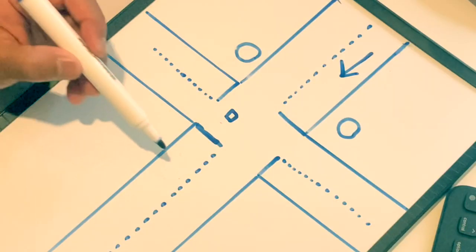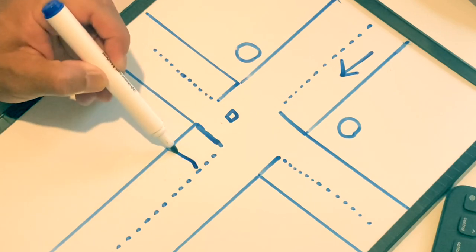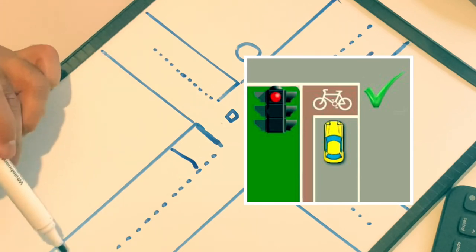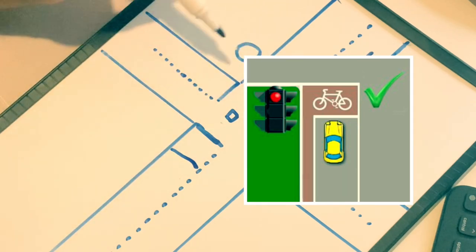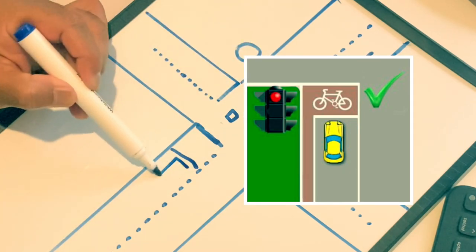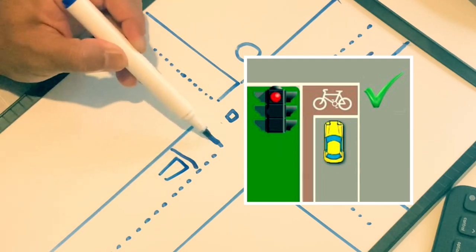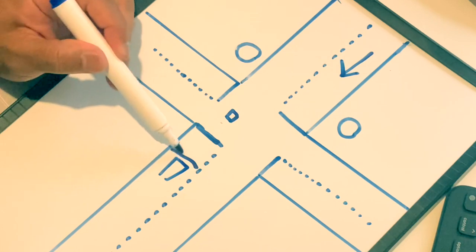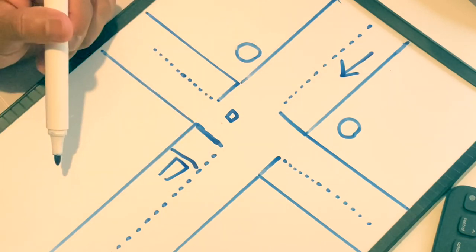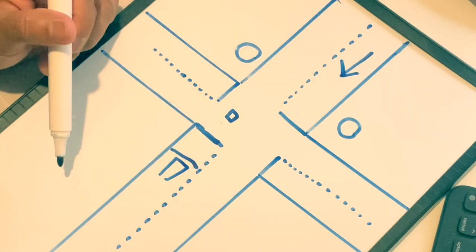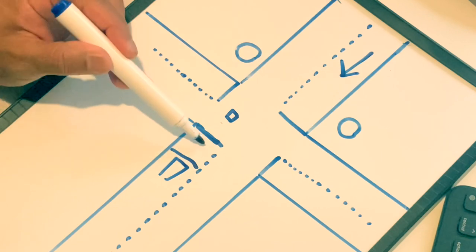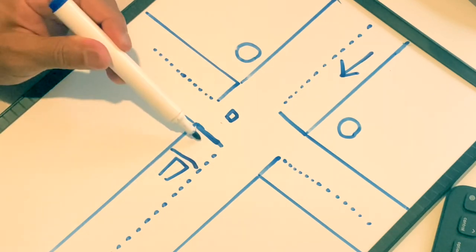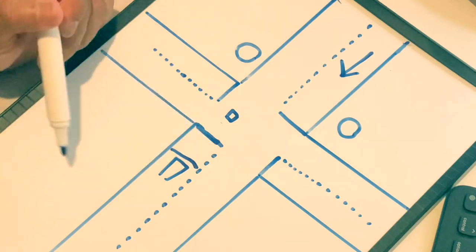The other problem is there could be another stop line here and this part is for cyclists. So when you approach the traffic light and it is red, make sure you stop behind here. Don't go there because this area is not for you — it is for cyclists. Many learners go and stop there and they will fail the test for that. So if there is a stop line here for cyclists, you stop behind the cyclist line. Don't go there. You only go there if there is no area for cyclists.